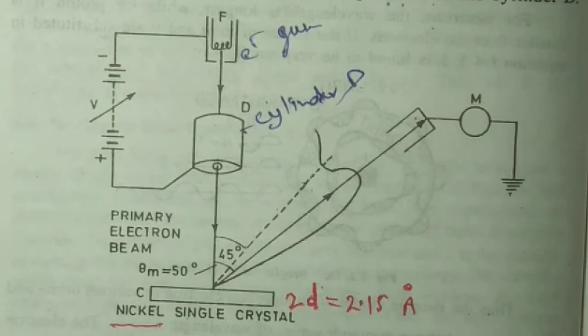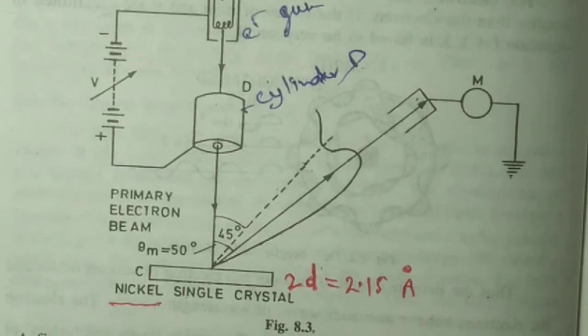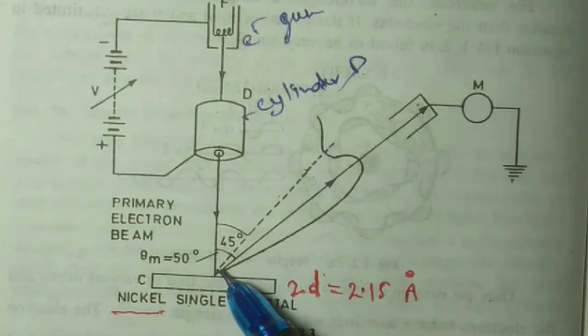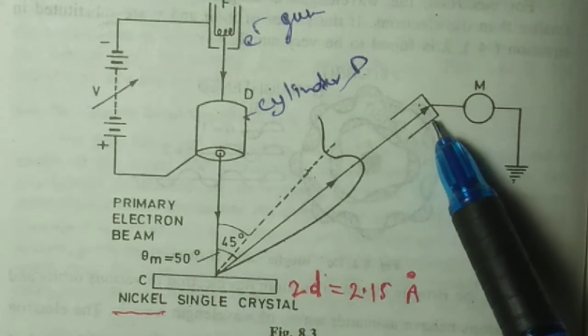So a fine narrow beam of electrons is incident on the nickel crystal C, and the electrons are diffracted through the nickel crystal and absorbed here at the detector.